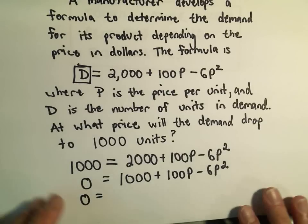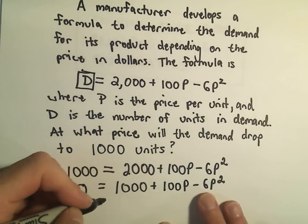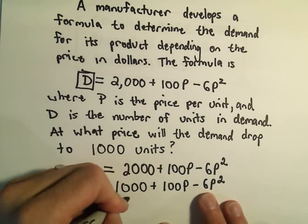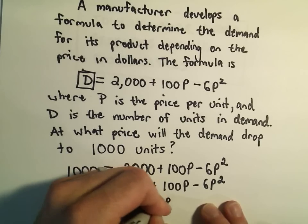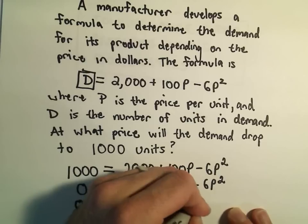I'm going to reorder things here a little bit. I'm going to write my negative 6P squared first, then I have my 100P, then I have my positive 1,000.